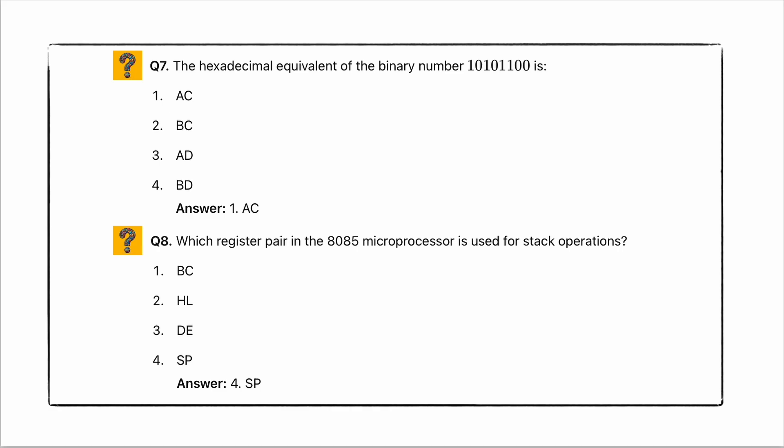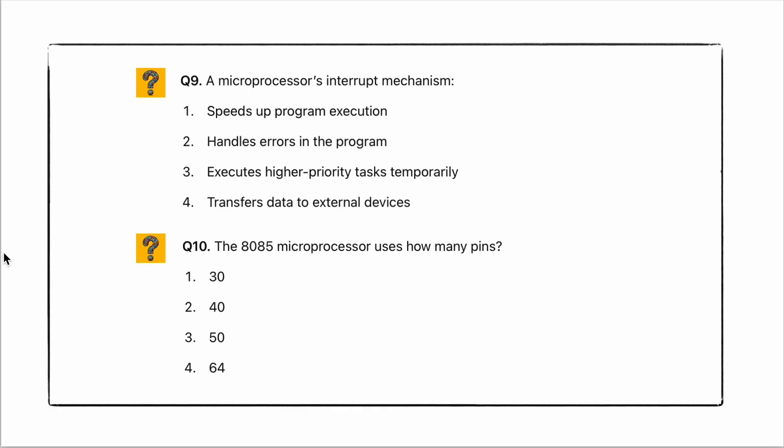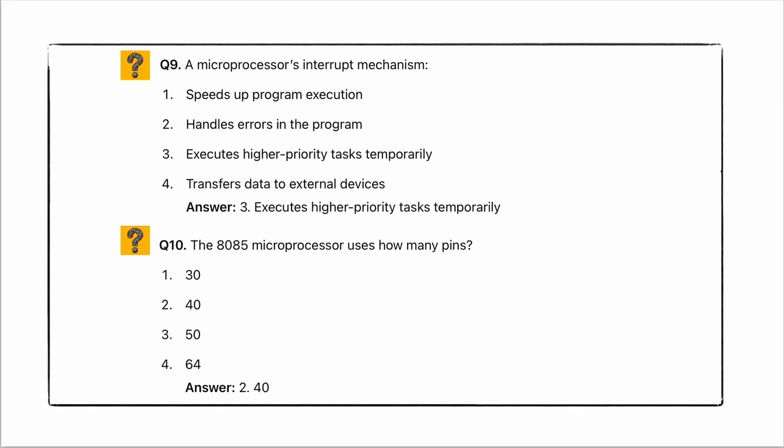Coming to the last two questions of Set 1: microprocessor interrupt mechanism. The 8085 microprocessor uses how many pins? Coming to the answer: the interrupt mechanism executes a higher priority task temporarily. The 8085 pin count is 40. The first set is completed.